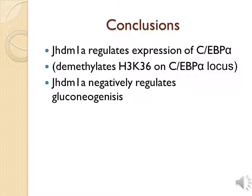In recent years, a number of histone demethylases have been identified. While these discoveries have dramatically changed views that histone methylation was a stable, non-erasable marker, our knowledge regarding the functions of these demethylases is still very limited. In this experiment, using a short RNA screen on known histone demethylases, JHDM1A was identified to negatively regulate gluconeogenic gene PEPCK and G6Pase expression in vitro and in vivo. It was found that JHDM1A does not directly control PEPCK and G6Pase expression; rather, it exerts its function through regulation of CEBP-alpha. JHDM1A negatively regulates the expression of CEBP-alpha by dimethylating H3K36 on the CEBP-alpha locus.